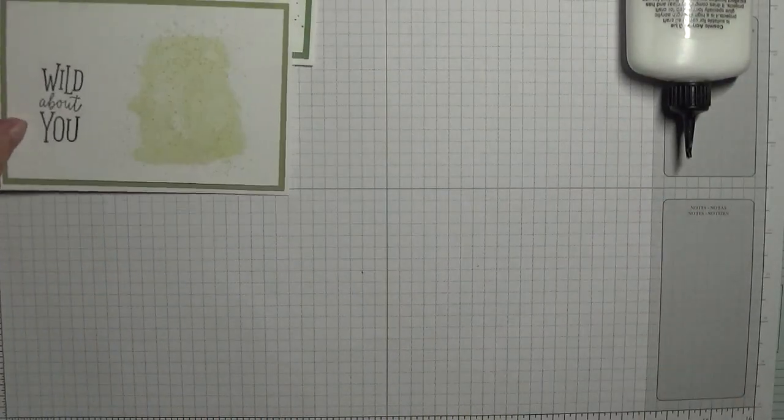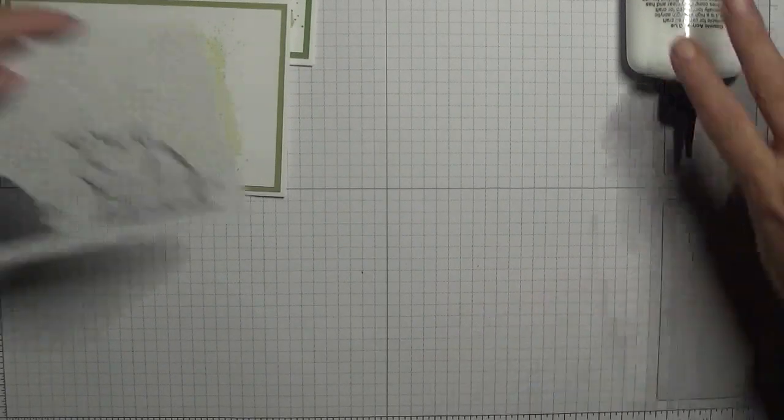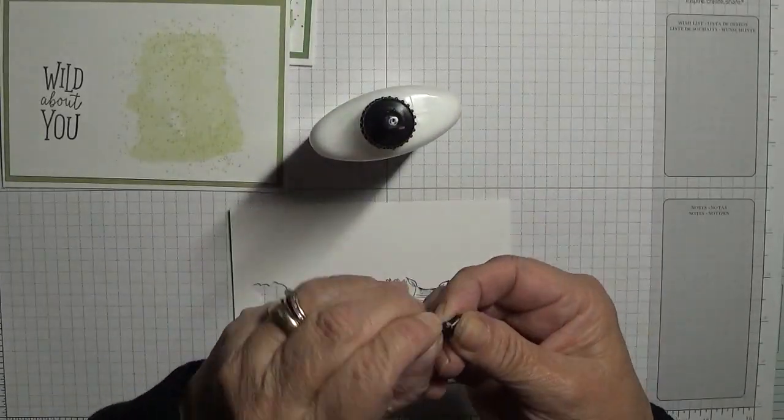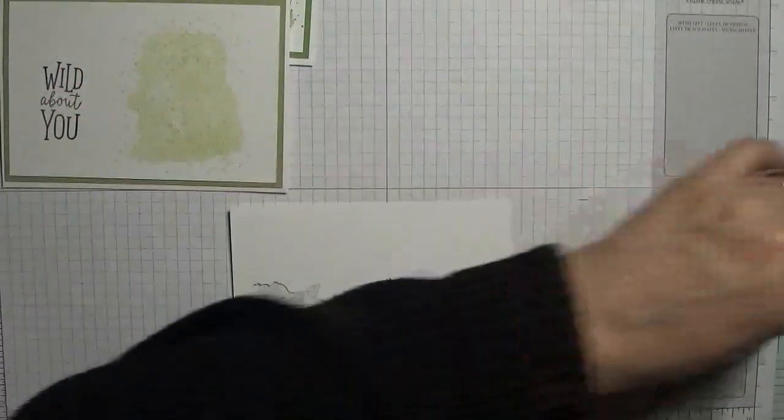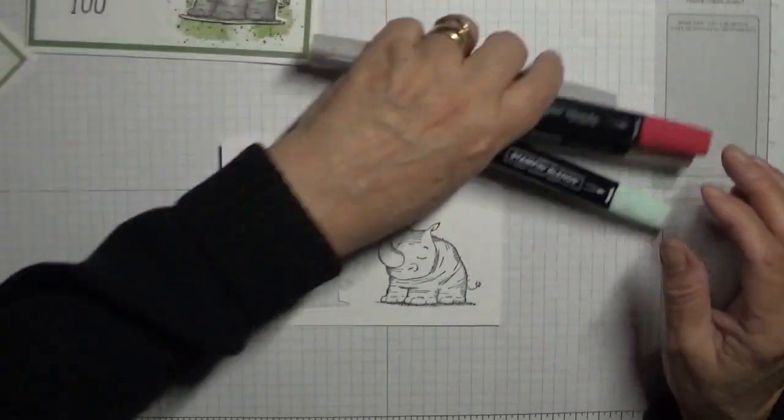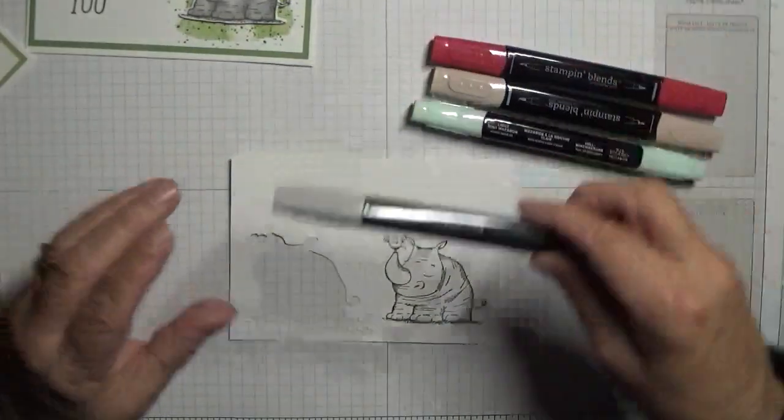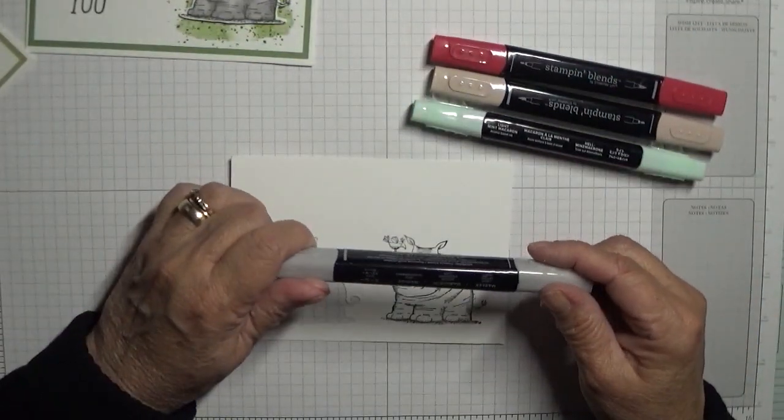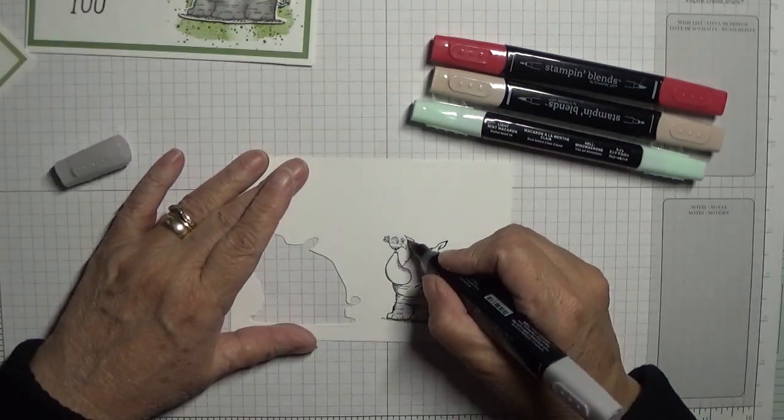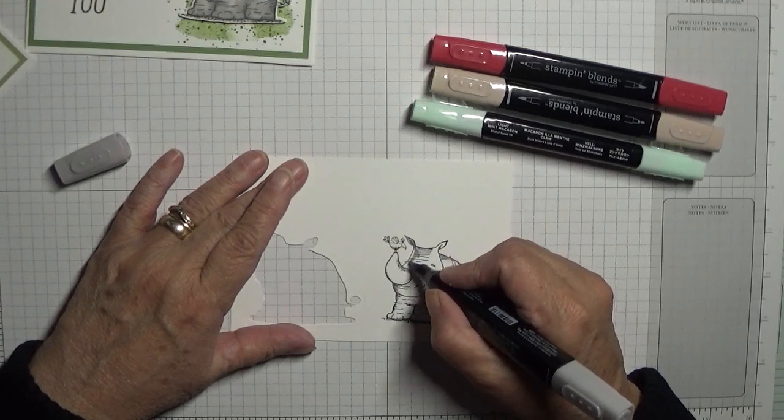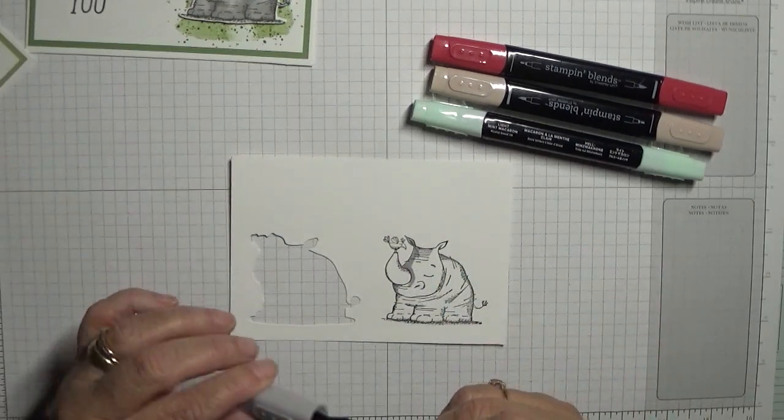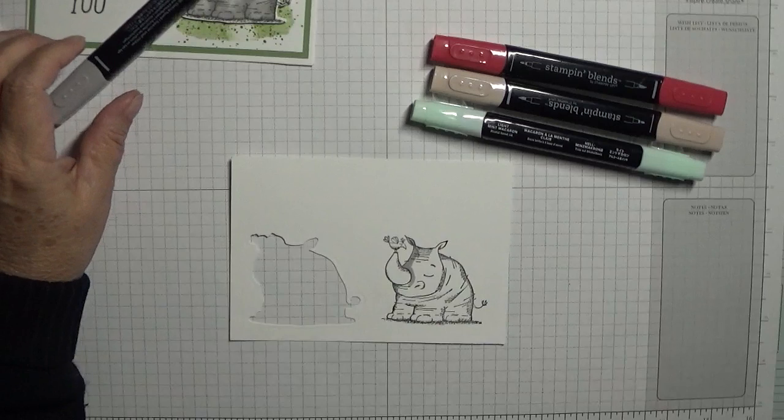All we've got to wait now is color in the rhino. Just put my lid on my glue while I'm doing that. To do that we're going to use the blends. With light smoky slate we're going to color in the rhino. First thing we've got to do is with a black tip pen...